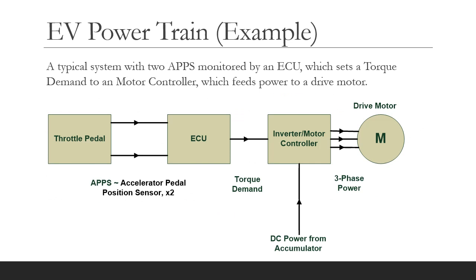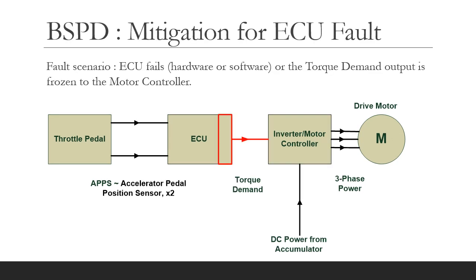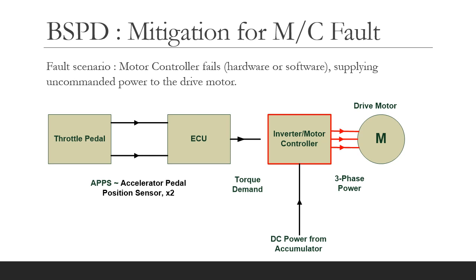To understand the purpose of the BSPD, let's look at a typical powertrain. This one has two accelerator pedal position sensors feeding to an ECU, which sets the torque demand to an inverter or motor controller, which converts DC power to an AC supply to the drive motor. The BSPD can be a mitigation for an ECU fault — if the ECU fails, either hardware or software, or the torque demand output to the motor controller is frozen, the BSPD can act and open the shutdown circuit. An alternative mitigation is for a motor controller or inverter fault: if the motor controller fails and there is uncommanded power to the drive motor, the BSPD can act and open the shutdown circuit. You can see that we measure the DC current to the inverter or motor controller.